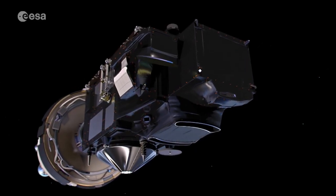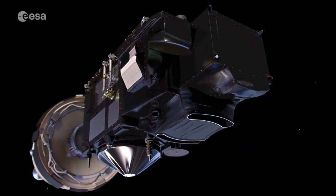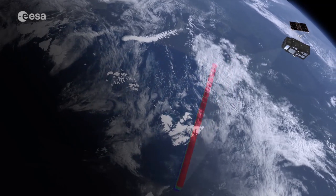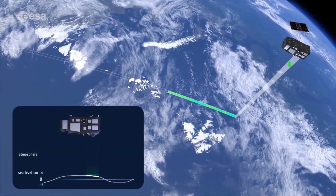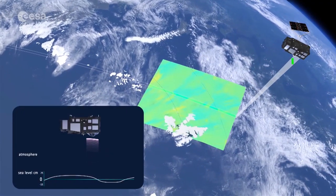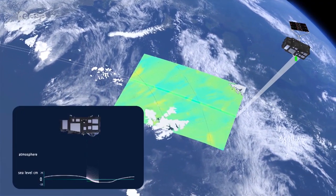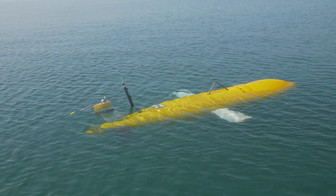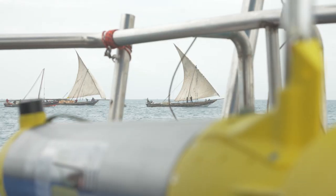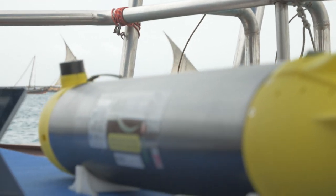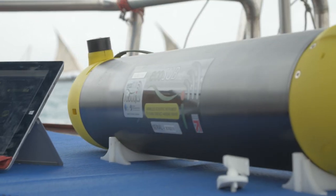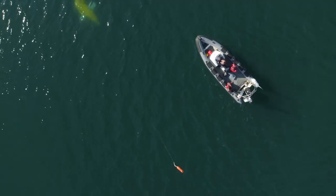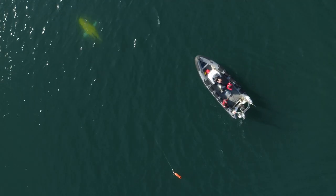Earth observation satellites monitor the oceans daily, collecting a wide range of marine data most of which are then made freely available from global archives. Marine autonomous systems are becoming ever more reliable and easy to use for environmental observations at a fraction of the cost of a research ship.